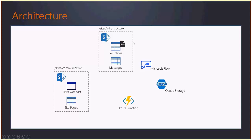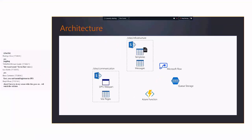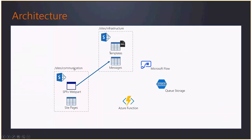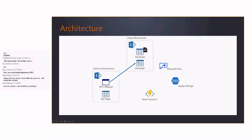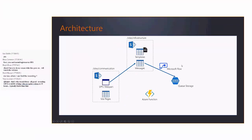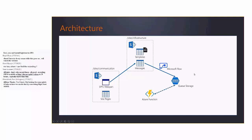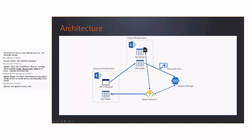The client wanted the capability to tag news articles with metadata as we previously used to do with page layouts and the content types approach. Inspired by the P&P Partner Pack, we created a separate site collection called Infrastructure where we store document library templates and a list to send messages to queue storage. We have a SharePoint web part in a communication site on a home page. It stores a message in the list, then Microsoft Flow queues that message, then an Azure Function gets the template and applies provisioning and changes the content type - since when applying provisioning of a page the content type is Site Page.